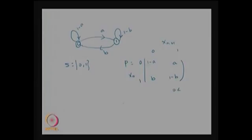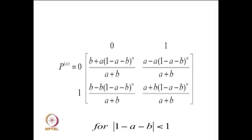Both a and b lie between 0 and 1. Here a is the probability of transmitting digit 1 at stage n+1 given digit 0 at stage n, so the complement 1-a is the probability of staying at 0. Once the one step transition probability from 0 to 1 is a, then 0 to 0 is 1-a. Similarly, 1 to 0 is b and 1 to 1 is 1-b.